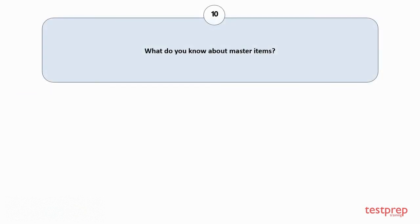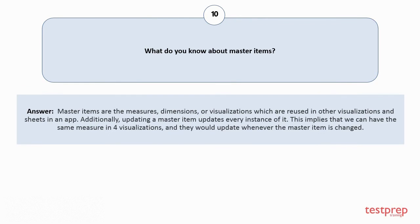Question number 10: What do you know about master items? Master items are the measures, dimensions, or visualizations which are reused in other visualizations and sheets in an app. Additionally, updating a master item updates every instance of it. This implies that we can have the same measure in four visualizations, and they would update whenever the master item is changed.